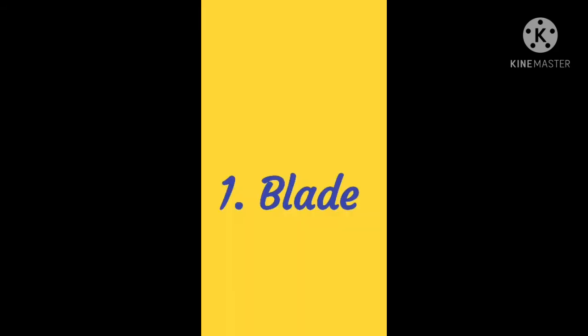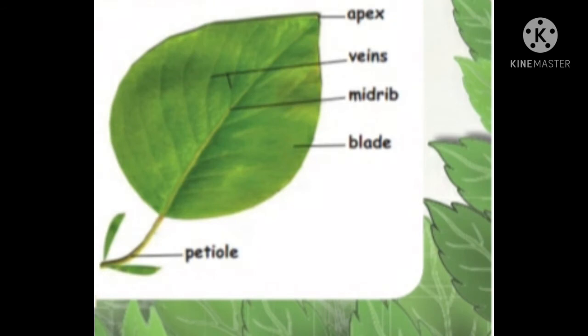First one: blade. The broad flat part of the leaf is called the blade.